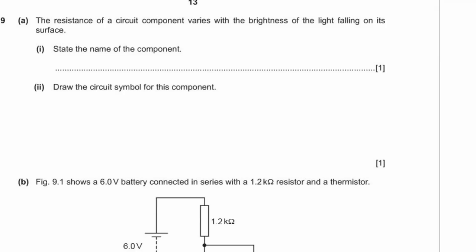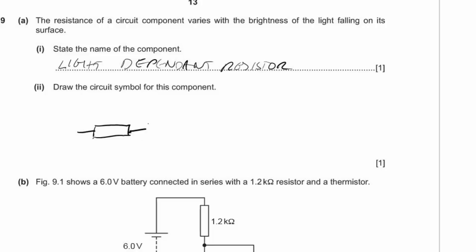Question nine: a component whose resistance varies with the brightness of light falling on it is called a light-dependent resistor (LDR). The circuit symbol for an LDR is a resistor symbol with arrows indicating light falling on it.